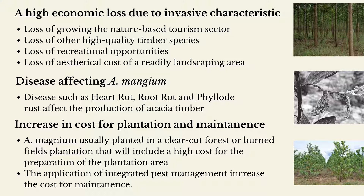The loss of readily available landscaping areas will reduce landscape value and make it less effective. Diseases such as heart rot, which affects the stem of Acacia mangium, cause damage to the plant and decrease timber production, resulting in great economic loss over time spent for the plantation. Acacia mangium favors clear-cut forest or burnt fields for its plantation site, as this enables easier forest invasion compared to high-density forest. However, it requires high costs for plantation area preparation, as well as high maintenance costs, especially for pest management, as it is easily harmed by pests that damage seedlings, branches, and stems.